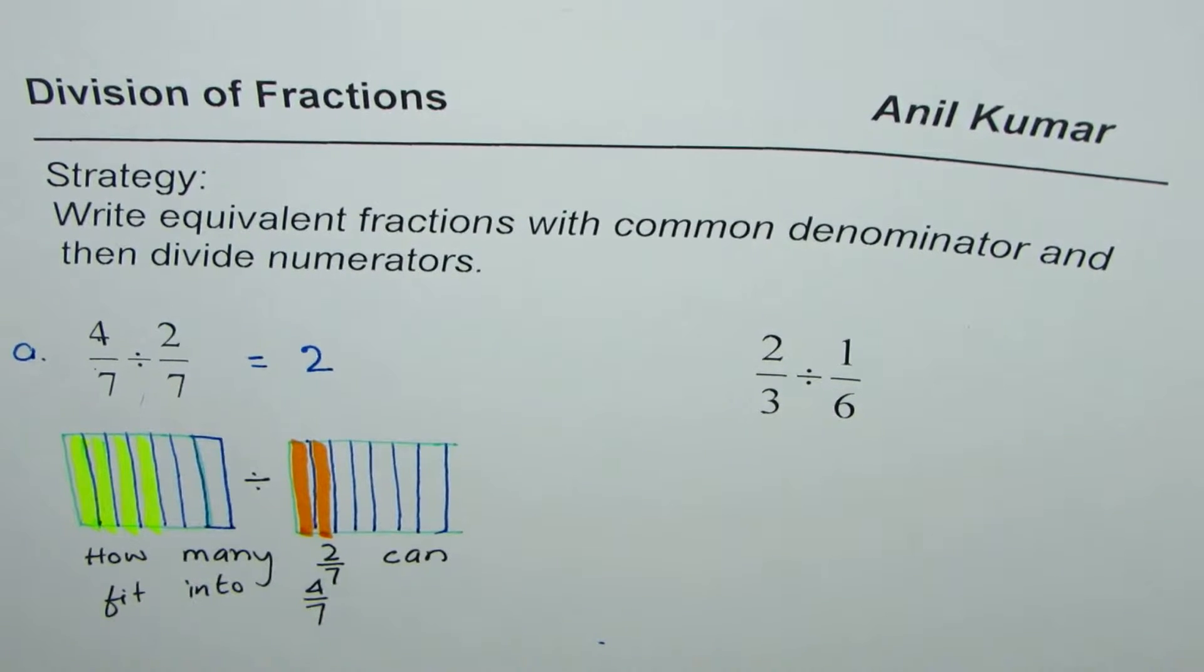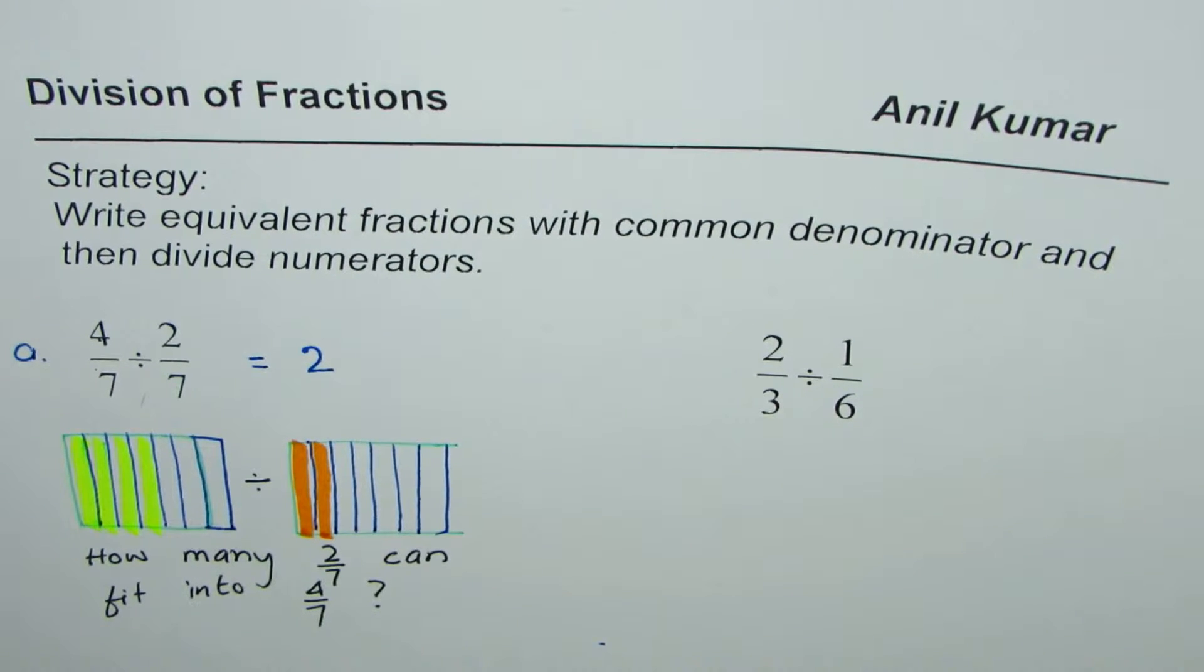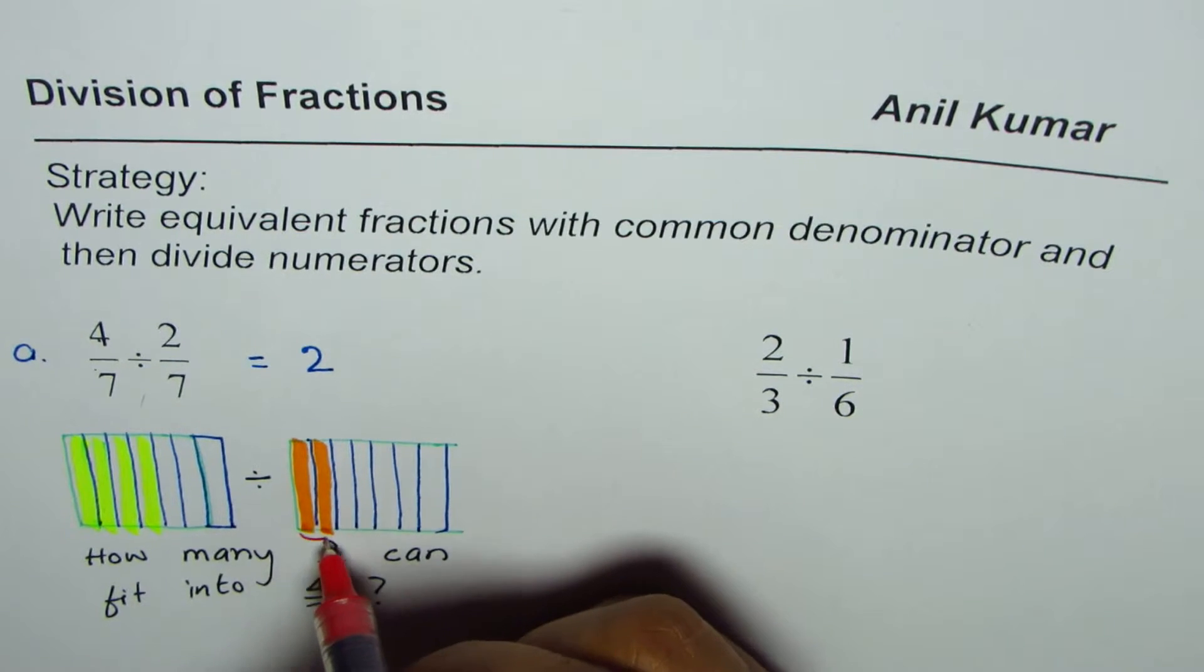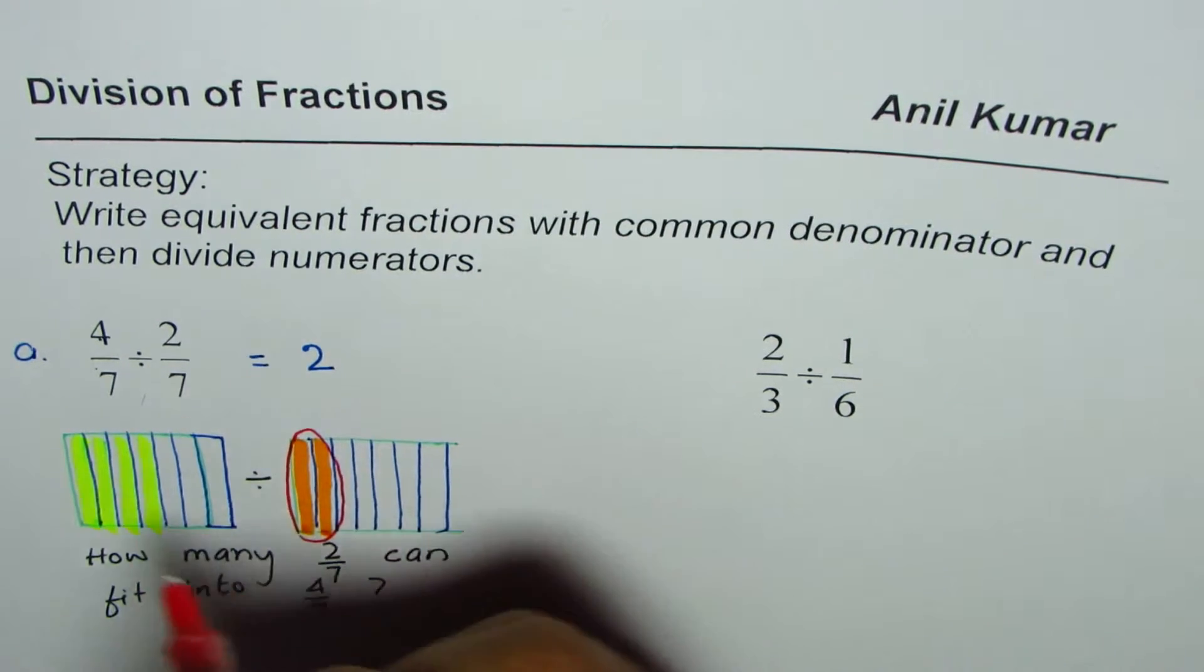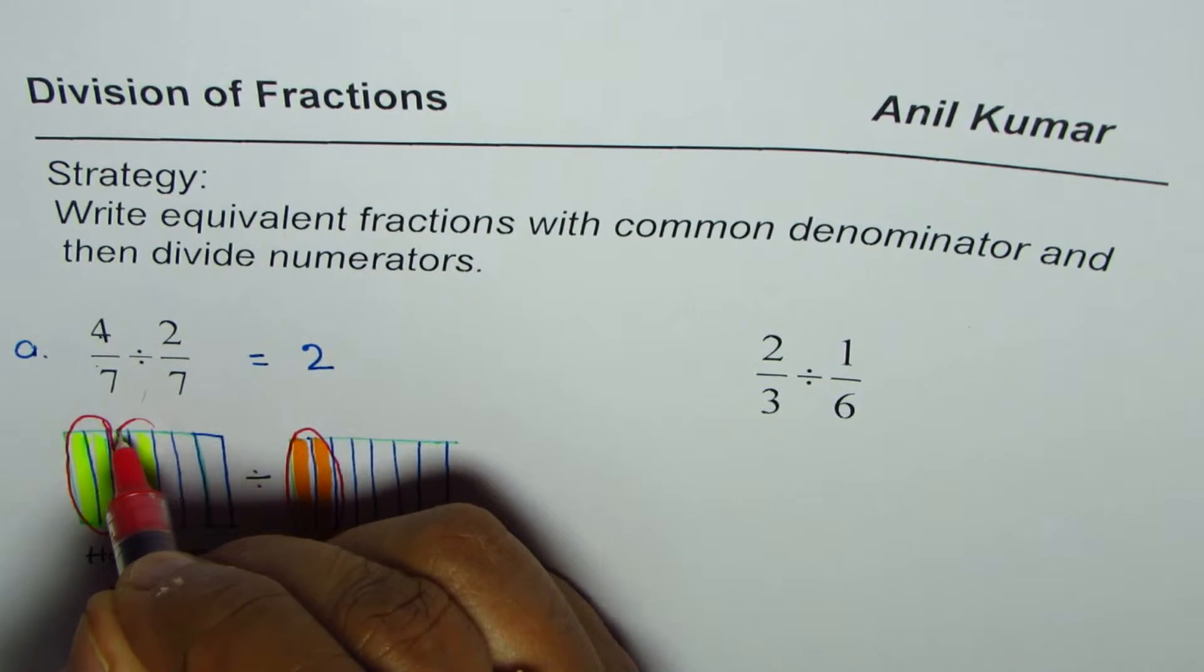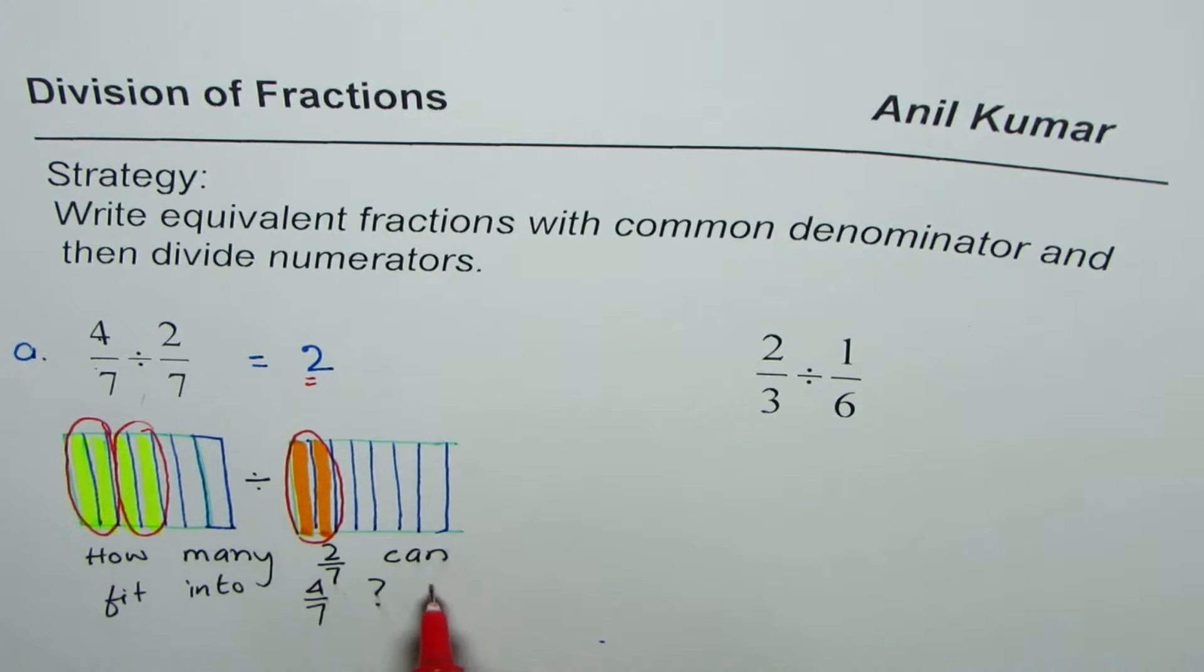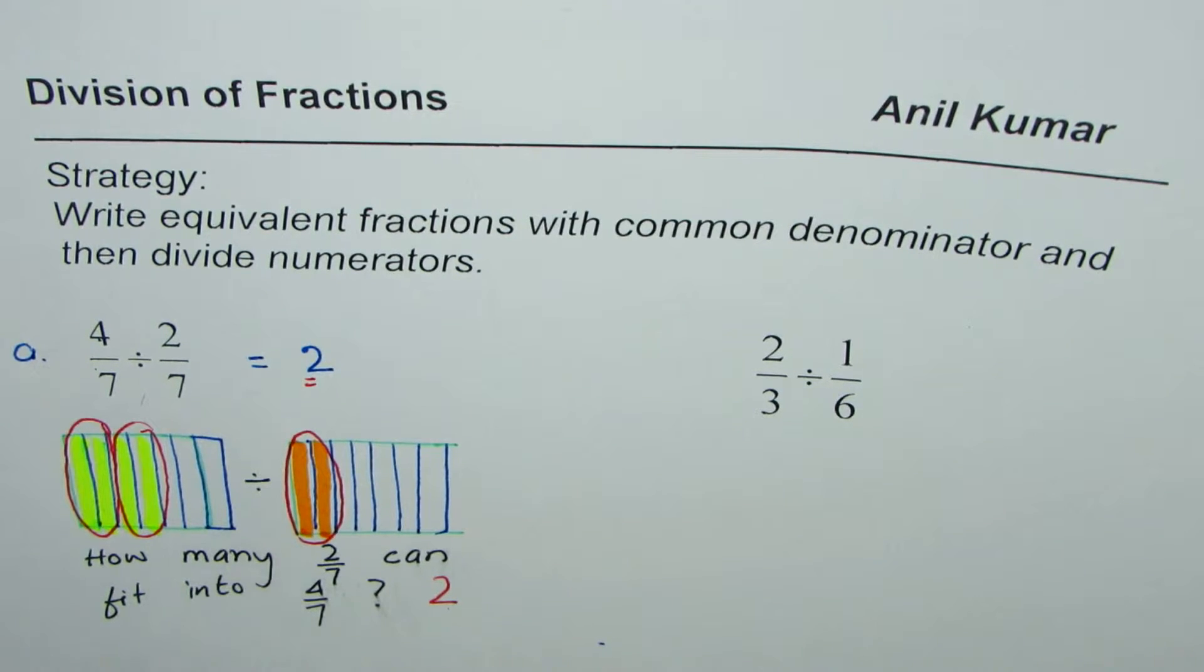This is what we are trying to answer. So that is the question which you need to ask. Clearly you can say we have a group of two here. We can fit one here and the other one there. So two can fit in, and we get two as our answer. And that is what the result is. So that is a visual explanation of what we just did, and sometimes we call this as area model.